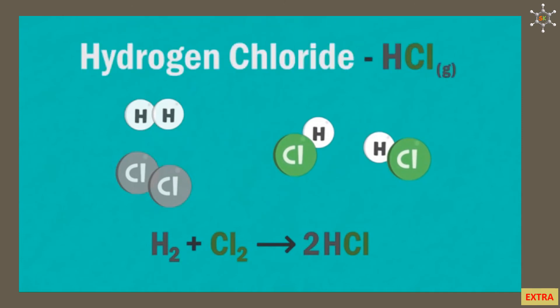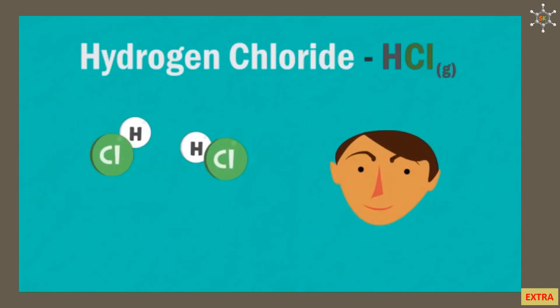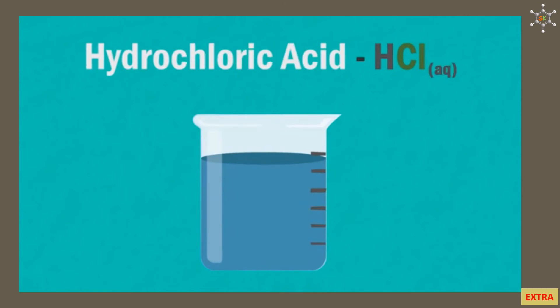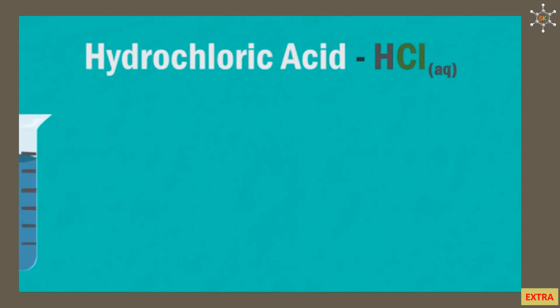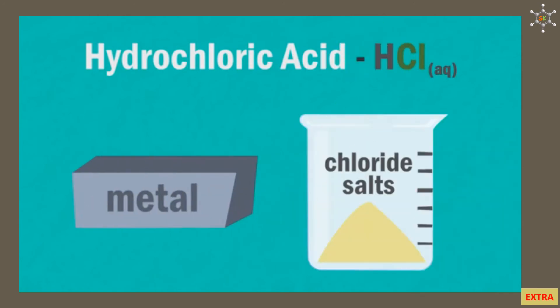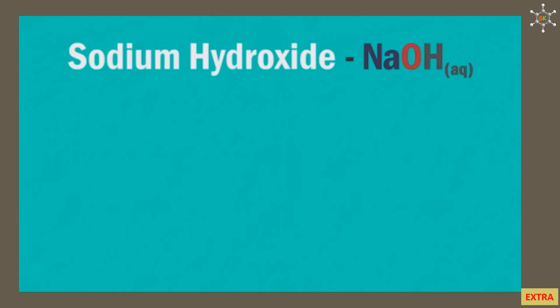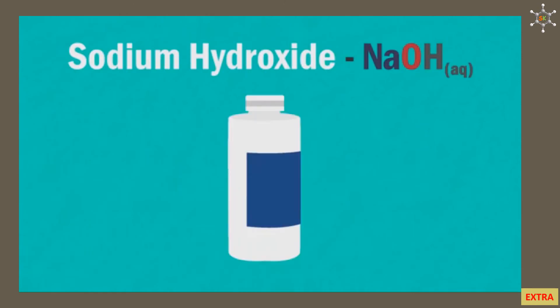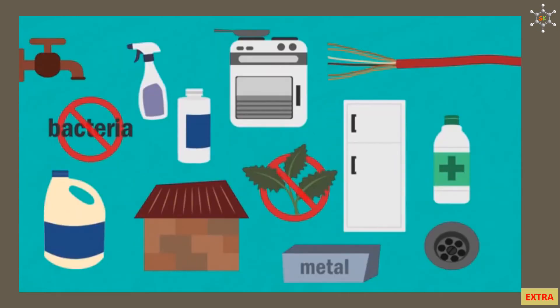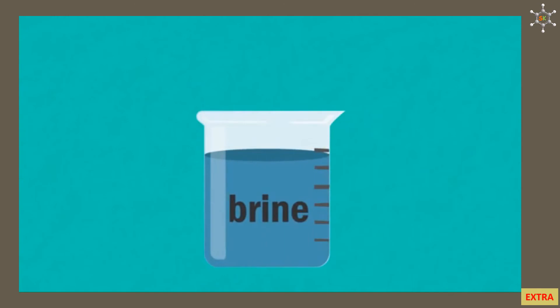Some hydrogen and chlorine from the industrial process are combined to form hydrogen chloride gas, which dissolves in water to produce hydrochloric acid — useful for cleaning metal and producing chloride salts. Sodium hydroxide is used as a cleaning product, most commonly for cleaning ovens and unblocking drains.